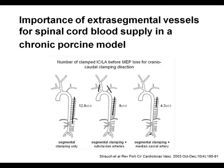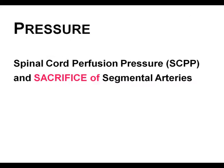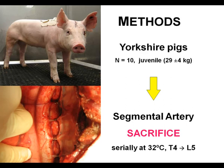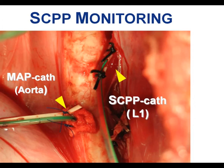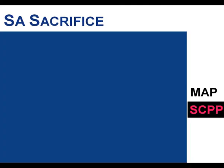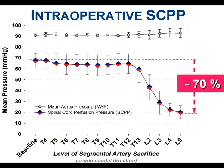Using a porcine model with 10 Yorkshire pigs, a catheter was placed into the stump of a lumbar segmental artery and one directly in the aorta to measure intraoperative spinal cord perfusion pressure. At baseline, SCPP was 80 mmHg and MAP was 90 mmHg. With serial segmental artery sacrifice, SCPP progressively dropped: below 50 mmHg at T12, down to 40 mmHg at L2, and after complete sacrifice, SCPP diminished below 30 mmHg—less than one-third of systemic pressure.